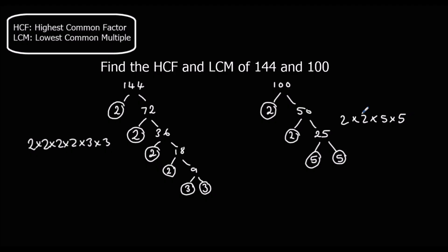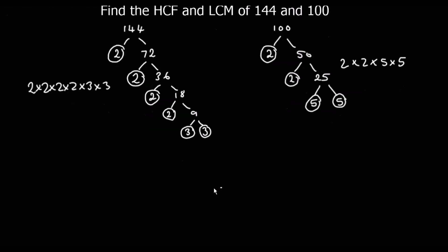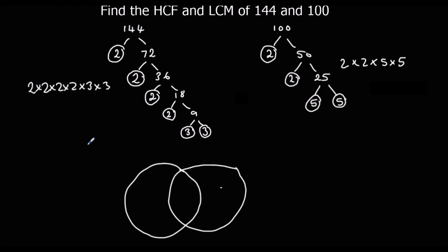So we're going to use this now to identify the highest common factor and the lowest common multiple. We're going to do a Venn diagram, with 144 in one circle and 100 in the other. The numbers that are prime factors of both are going to go in the middle. They've both got a 2, so that goes in the middle, and another 2.